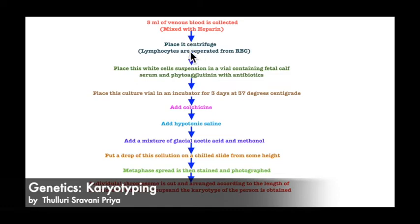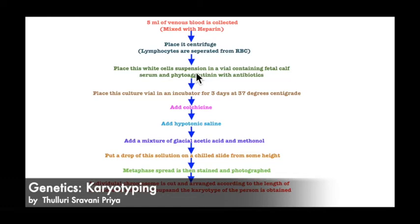Then we place that blood in a centrifuge. After centrifugation, the lymphocytes are separated from the RBCs. We take that white cell suspension and place it in a vial. The vial is a small container having fetal calf serum and phytohemagglutinin.